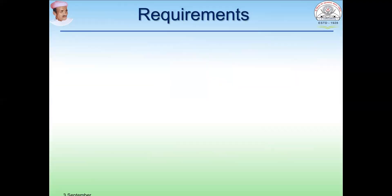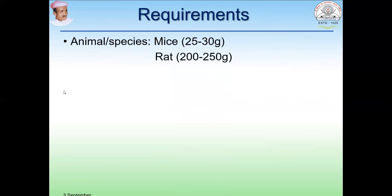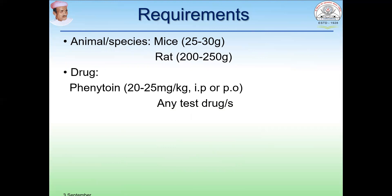The requirements for this experiment are as follows. You need animals — particularly mice or rats. If you are using rats, the weight should be 200 to 250 grams. If you are using mice, the weight should be 25 to 30 grams. Both species can be used for screening of anticonvulsant activity. You also need drugs. Some standard drugs are available; for example, phenytoin, which is an anticonvulsant drug. The dose is 20 to 25 mg per kg, IP or orally.